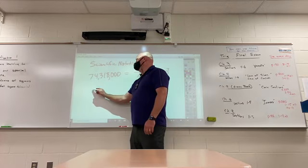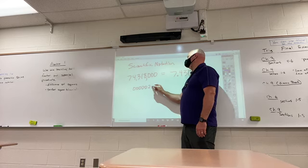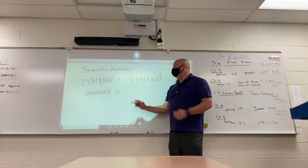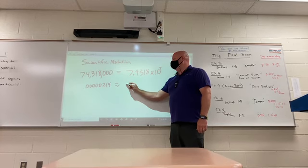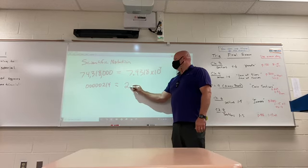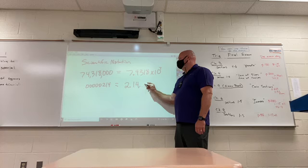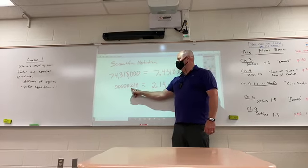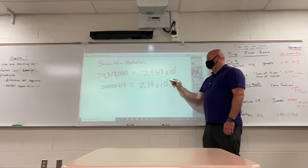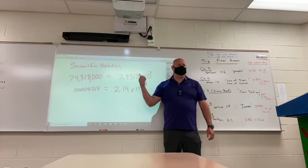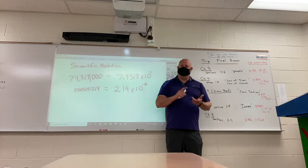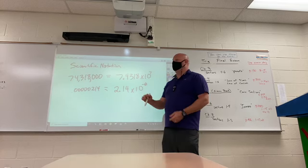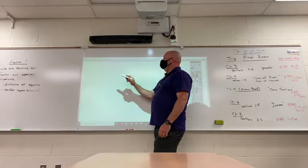If I give you .0000214, where do I want the decimal? Between the 2 and the 1, and then I moved it 1, 2, 3, 4, 5 — this would be times 10 to the negative 6. Remember: small numbers, negative exponents. Be able to put things in scientific notation, be able to take them out of scientific notation, be able to use scientific notation to multiply or divide.